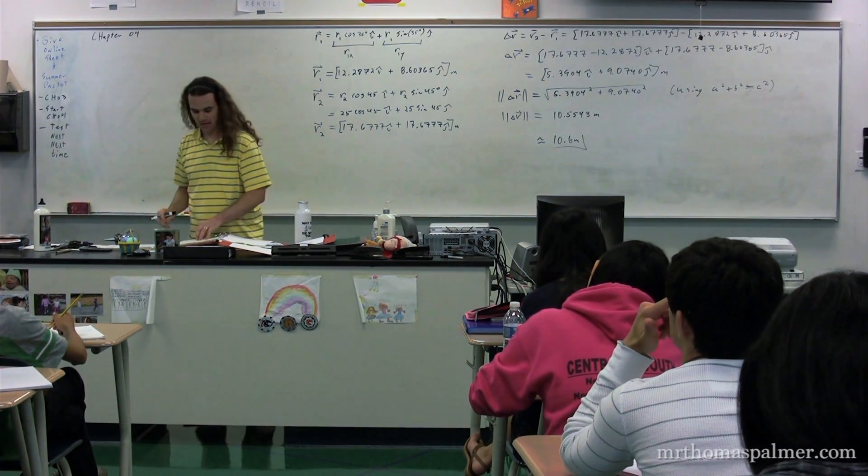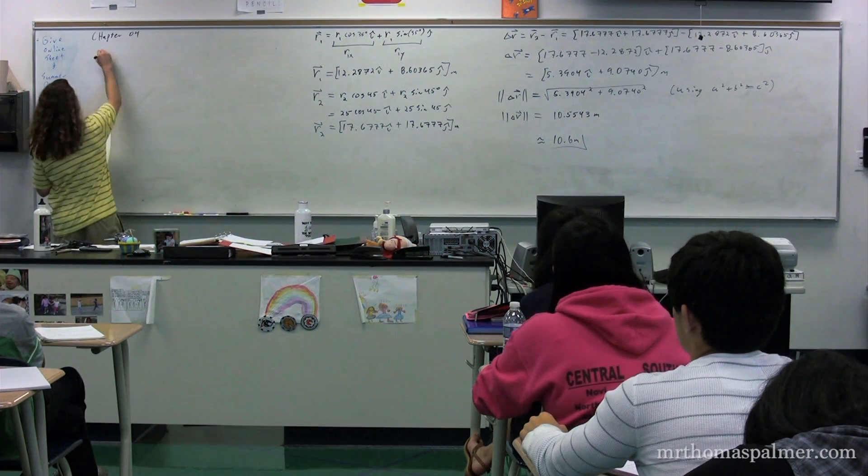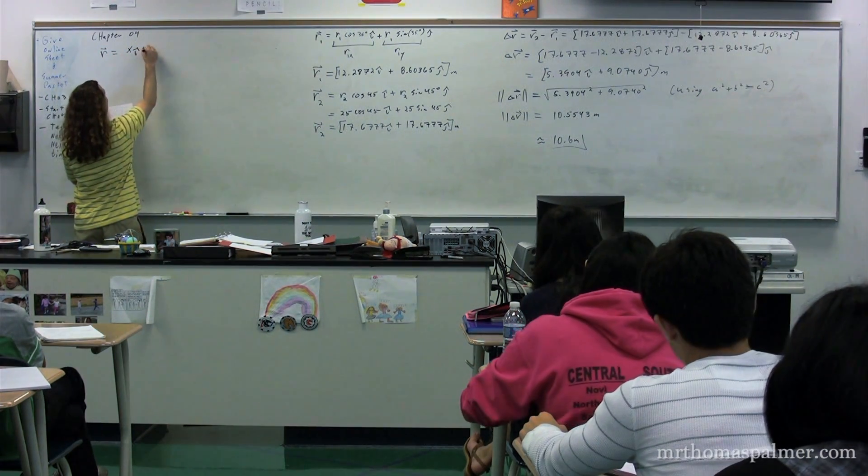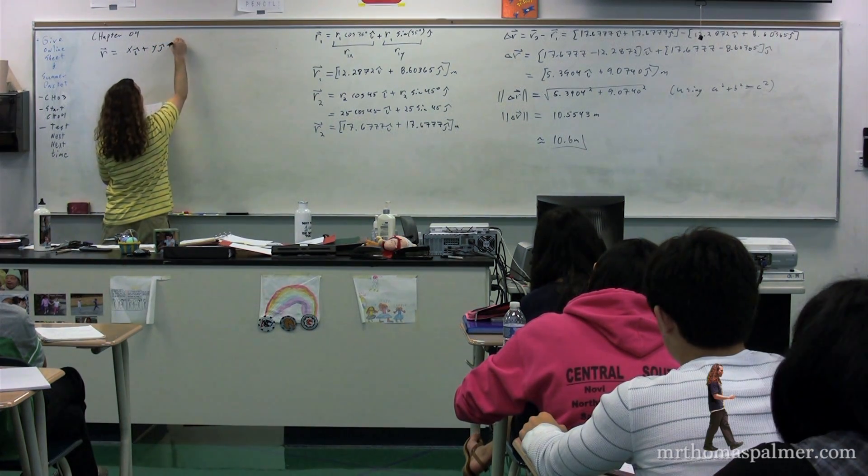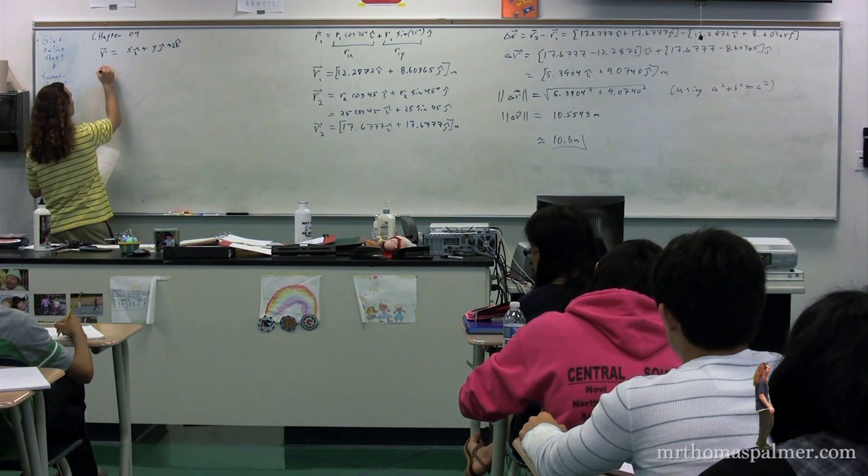Talking about this position vector in more detail, this position vector r is basically a vector that is x i plus y j plus z times k. It is a vector that identifies location.